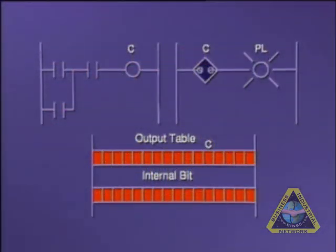If the output address you programmed corresponds to an output bit in the output table, the processor will turn on the output and therefore the field device connected to the module's terminal whose location maps the output coil address.